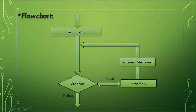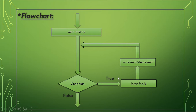If the condition is true, the control enters into the loop body and executes all the statements in it. Then the increment and decrement part is executed, which changes the value of the counter variable. The control again moves to the condition part, and this process continues while the condition remains true.